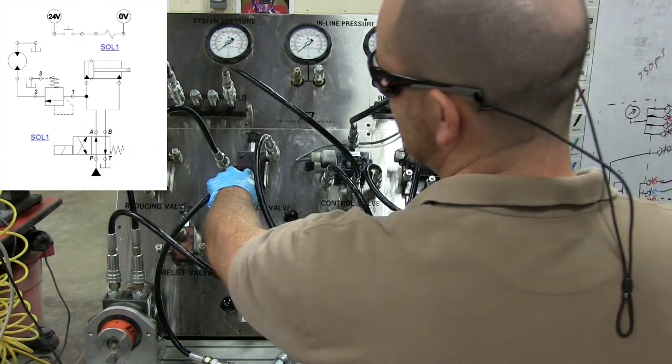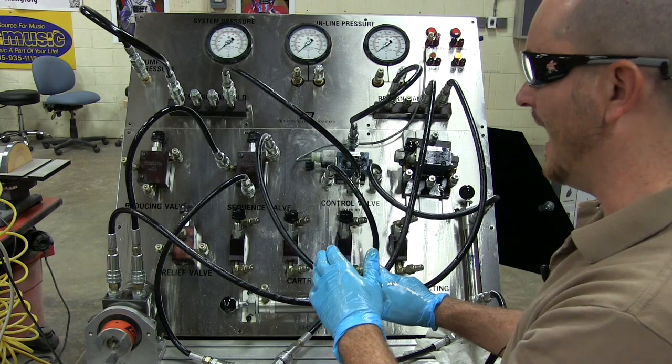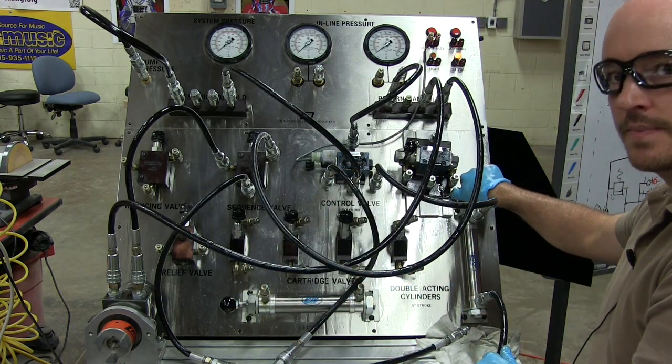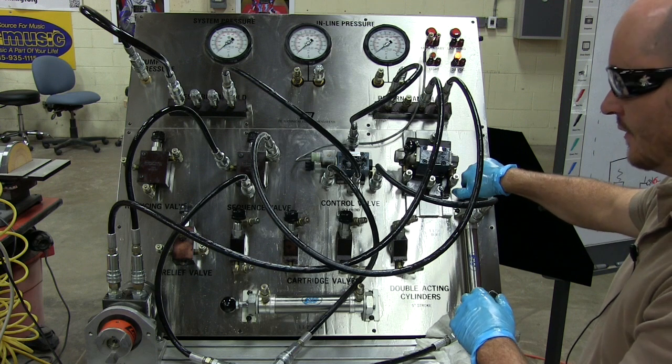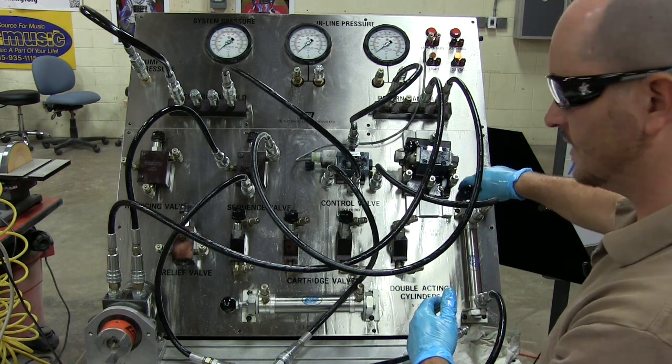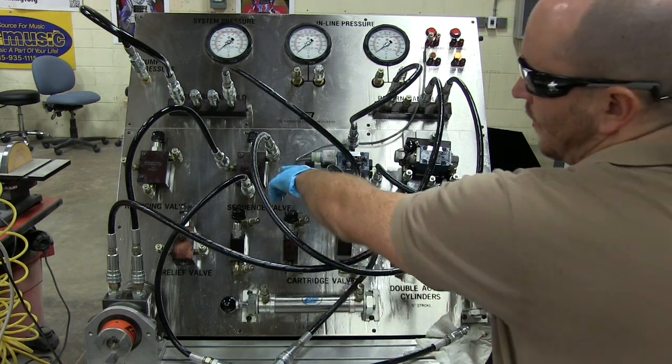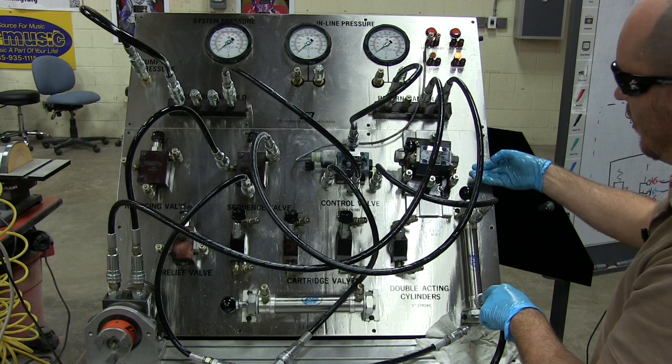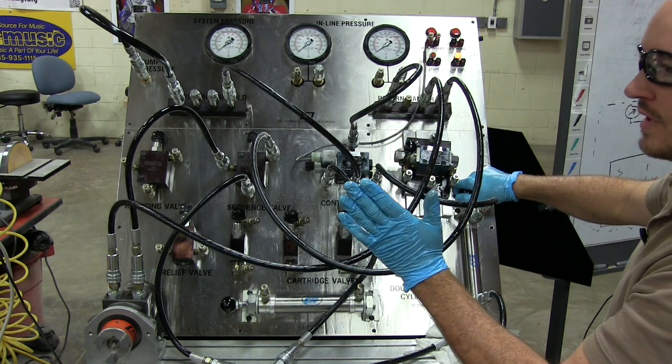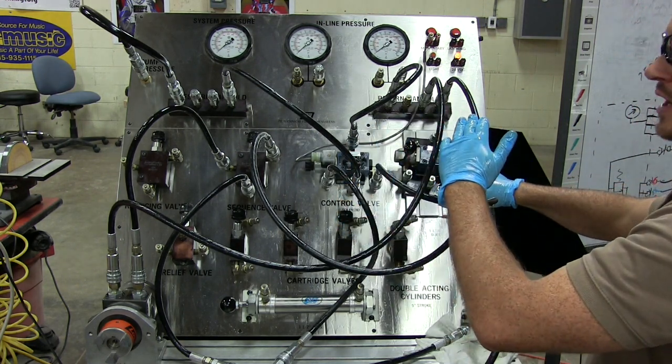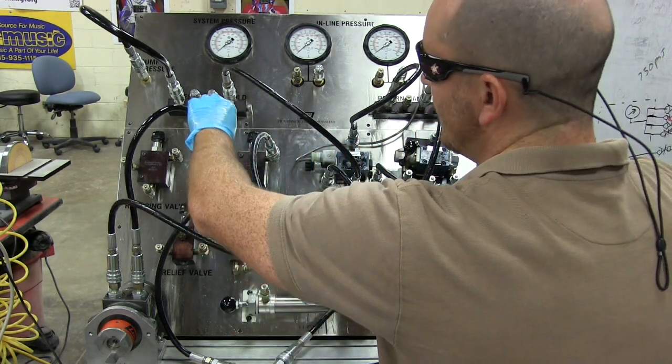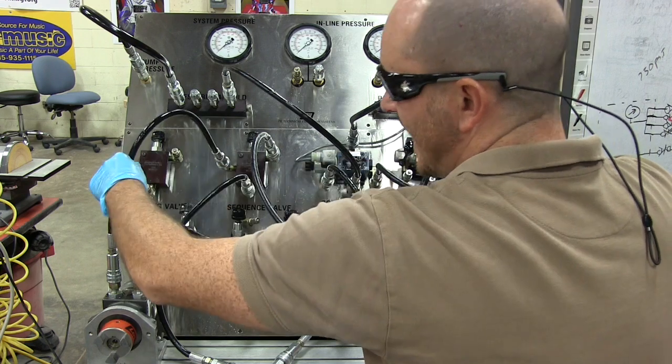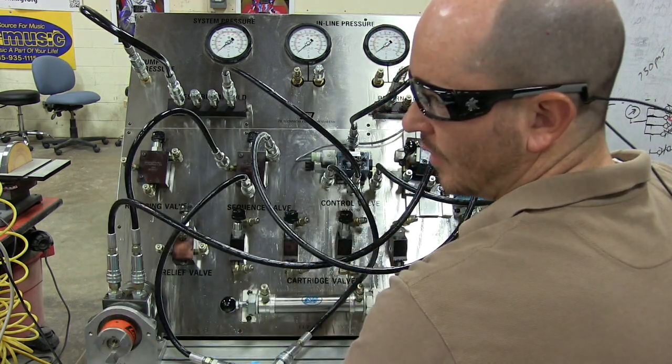Now, this sequence valve is set, I believe, to about 400 psi. Really, in this case, it doesn't matter. There's no load on our cylinder. But if there was a load that required, let's say, 300 psi to extend out, we would want to set this at 400 or 450. So when this extends all the way out, we'll go from 300 up to max pressure. And that max pressure is going to be enough to overcome the biasing spring in here and send that oil right down to the motor.